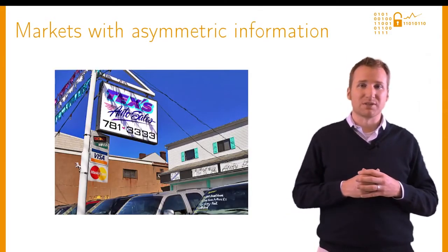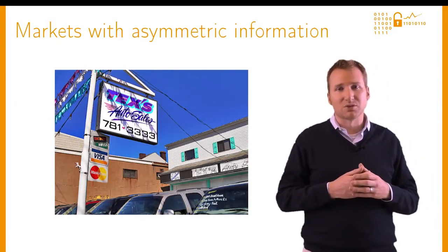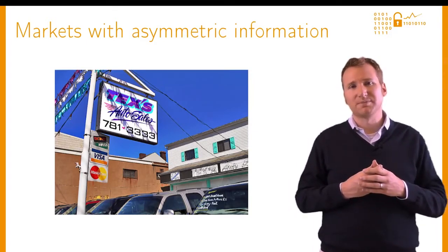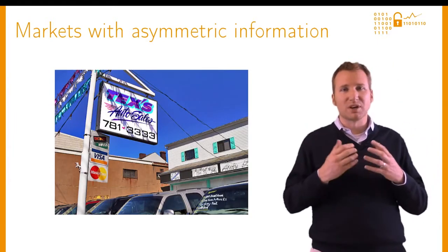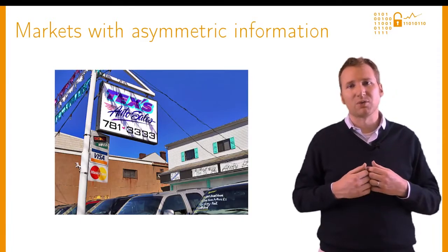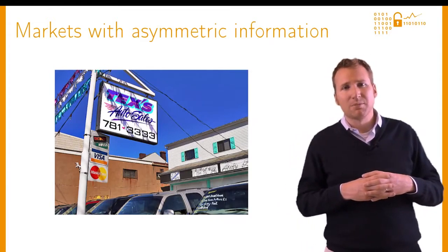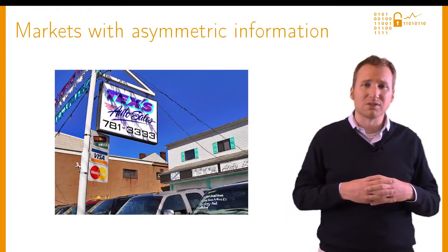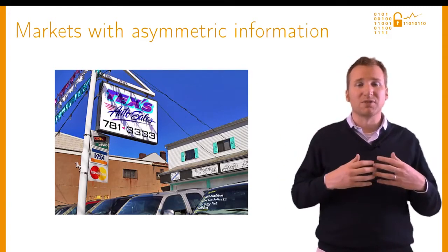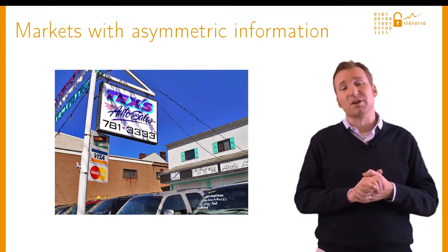The second market failure we'll discuss are markets with asymmetric information. Ross alluded to this during the first week's lectures when we discussed Akerloff's market for lemons, but we'll discuss it now in greater detail. Here we have a picture of a used car lot, which is the canonical example of a market with asymmetric information. As a buyer of a used car, you don't actually know whether the quality of the car is high or low. The market for lemons that Akerloff described explained that because buyers cannot distinguish high from low quality, they refuse to pay a premium for the higher quality good. As a result, the market gets flooded with only low quality goods because they're the only goods being sold willingly. This is a problem for security in a number of ways.